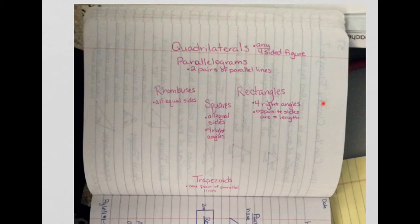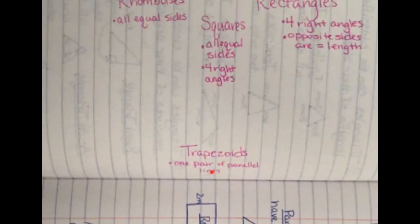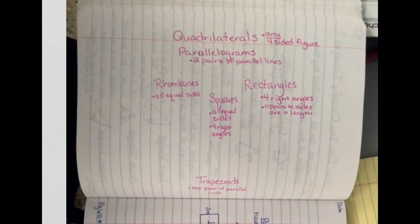A rectangle — rectangles have four right angles and opposite sides are equal length. Down here at the bottom you have that trapezoids have one pair of parallel lines.